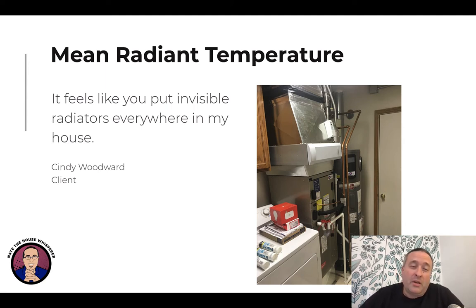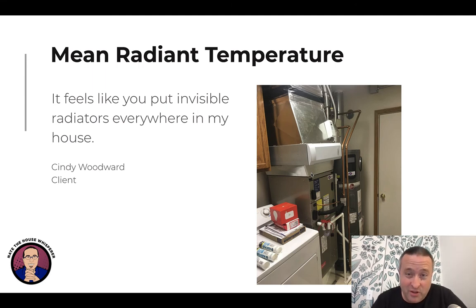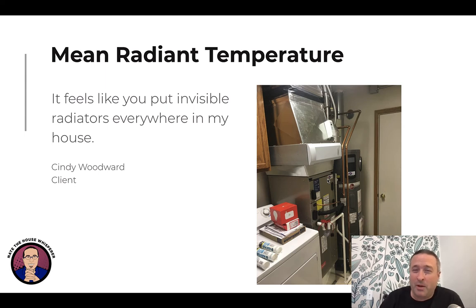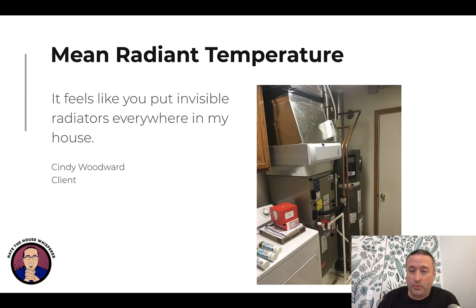If you achieve good MRT, this is the kind of feedback you're going to get: 'It feels like you put invisible radiators everywhere in my house.' This is one of our electrification clients — we went from a 70,000 BTU furnace to a two-ton heat pump. This is still a bit oversized; it's a VNA Zero Carrier Green Speed that only ramps down to about 50% of full capacity. In retrospect I probably should have recommended the five-stage more. We also pulled her gas meter. Note there's a Sense energy monitor here — you can learn a lot from these, though I'd suggest an Emporia rather than a Sense now.